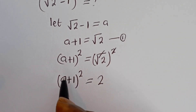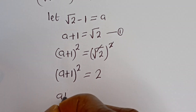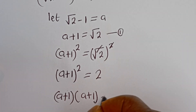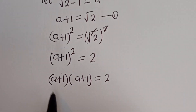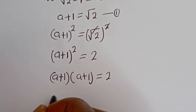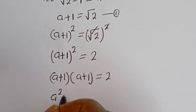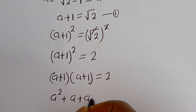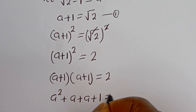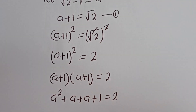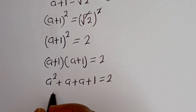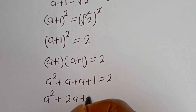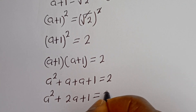We cancel the square and root, so a plus 1 squared is equal to 2. Expanding: (a + 1)(a + 1) gives a squared plus a plus a plus 1, which is a squared plus 2a plus 1, is equal to 2.